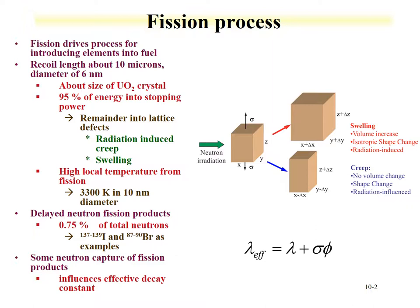Neutron capture changes fission product inventory: if we want to understand how much of a fission product remains at the end of irradiation, we must include not only its decay constant — a saturation-type effect — but also the neutron fluence and its cross-section, because some of that fission product will capture neutrons and be transformed into other isotopes. You have a decay effect based on its regular decay constant, and a separate effect from its neutron capture cross-section. This influences the concentration of a given fission product isotope in the material.